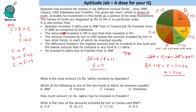So the values are: Franklin = 7, the two equal funds = 9 each, BNP = 13, Canara = 16, and the highest = 18. Total = 7 + 9 + 9 + 13 + 16 + 18 = 72 lakhs. The two equal funds are Axis and Edelweiss (in any order). Edelweiss is one of the two equally invested funds. Franklin received 7 lakhs. The ratio of Canara to BNP is 16:13.